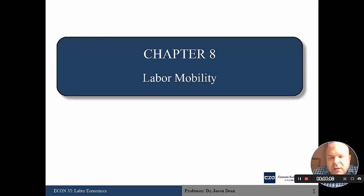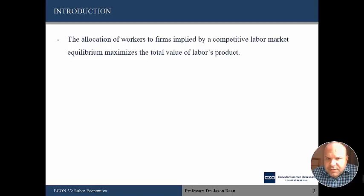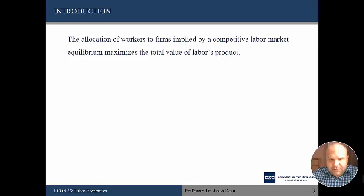Hello again and welcome to our lecture on Chapter 8, Labour Mobility. In a competitive labour market, the allocation of workers to firms implied by this type of market will maximize the total value of labour's product. Since firms will hire labour as long as the marginal benefit is greater than the marginal cost — which is the wage — we can't possibly allocate workers and firms in any other way that's better.